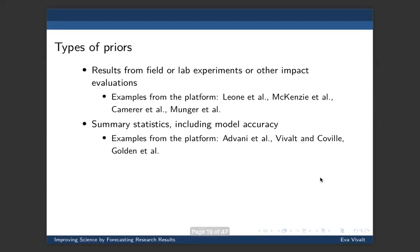In terms of the types of things you can predict, you can make predictions for any kind of field experiment, lab experiment, or other kinds of impact evaluations. I just listed here some examples pulled from the platform - this is not comprehensive. Some of them are statistics, including model accuracy, so you can predict how well models will actually match reality.